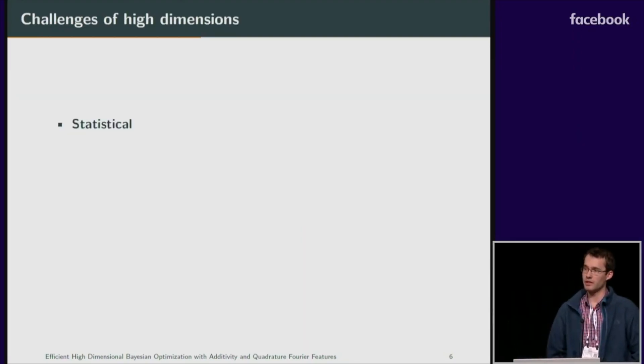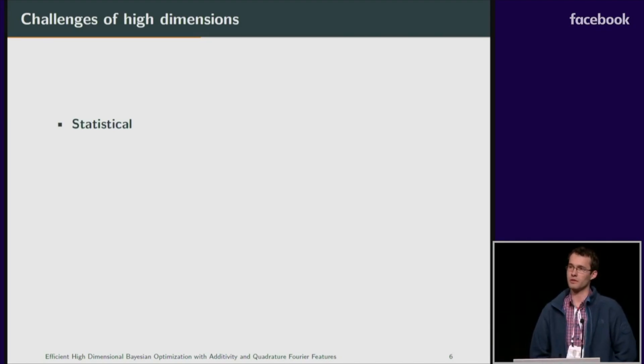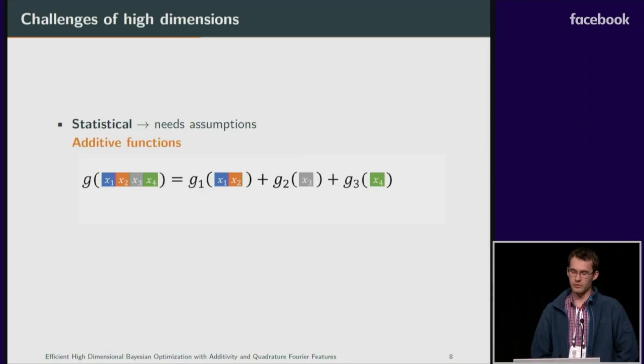So the challenges of high dimensions are twofold. On one hand, they're statistical, which comes from information theoretical considerations. And if we want an algorithm that's statistically efficient, we need further assumptions.